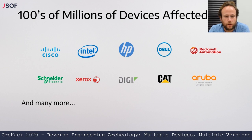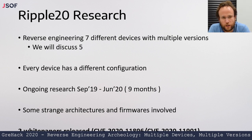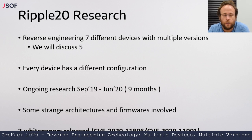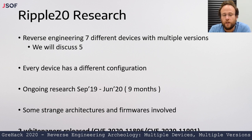Somewhere between 33 confirmed vendors and a few dozen still-pending vendors that haven't replied. The research itself took something like nine months with varying intensities, conducted from the end of 2019 into the beginning of 2020, with public disclosure in June 2020. In total, we reverse engineered seven different devices before the publication date. We've reverse engineered additional devices since. Some devices we reversed in multiple versions. We'll be discussing five of these devices today due to time limitations. We encountered some pretty strange architectures, firmwares, and operating systems.